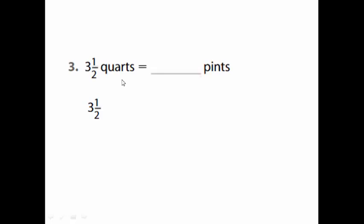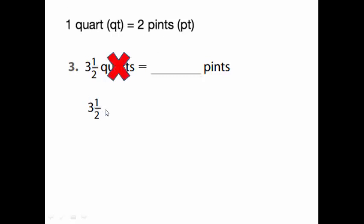We have this question here from your math book: 3 and a half quarts are equivalent to how many pints? You know that one quart equals two pints. So 3 and a half quarts — we cancel the word quarts and replace it with two pints — and finally it will be 7 pints.